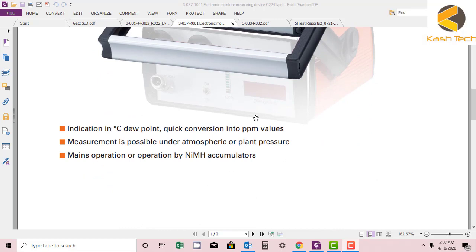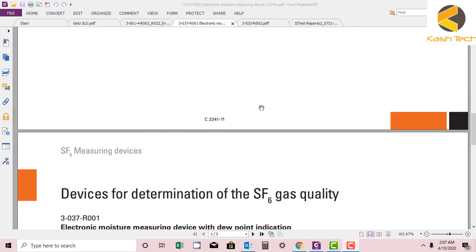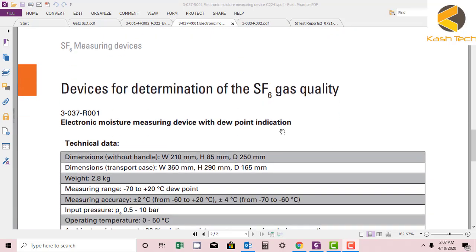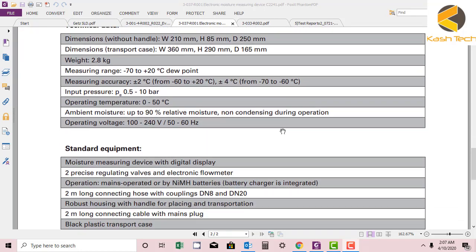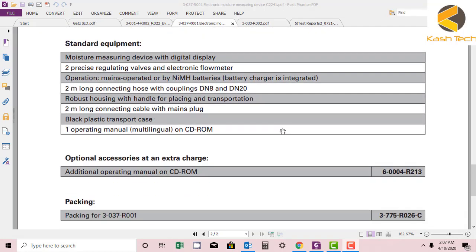Indication is in degree Celsius dew point with quick conversion into ppm value—so the result will be in parts per million. For devices for determination of SF6 quality, there is some data available here. So again, I will keep this data in my resources.